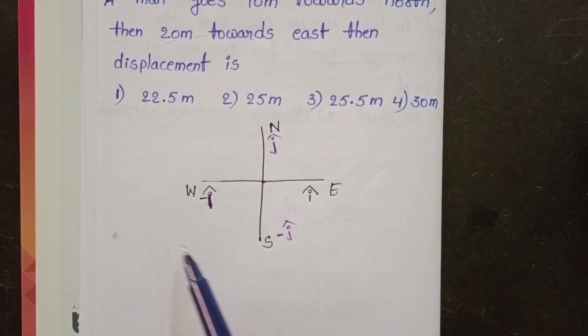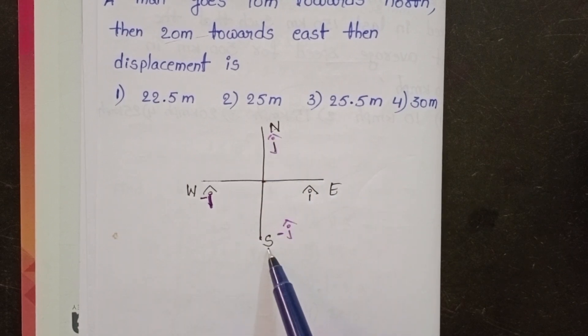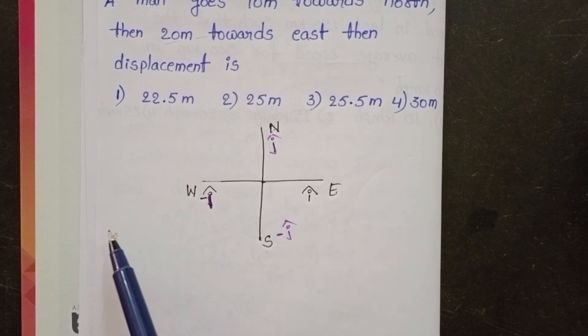This is the paper representation of the directions. Upward direction north, downward direction south. This is east and west.